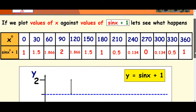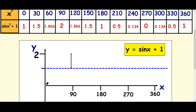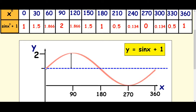So if we're plotting this graph, instead of starting at 0, the sin wave is now starting at 1. Then it's going to 1.5, then 1.866, and then 2, then down to 1.866, down to 1.5, then down to 1, 0.5, 0.134, and then back up again. If you draw a smooth curve through that, what's happened to the sin wave is the whole thing's been shifted up one position.